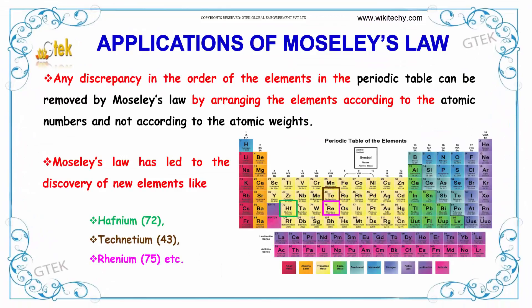Any discrepancy in the order of the elements in the periodic table can be removed by Moseley's law, by arranging the elements according to the atomic number and not according to the atomic weight. Moseley's law has led to the discovery of some new elements like hafnium, technetium, and rhenium.